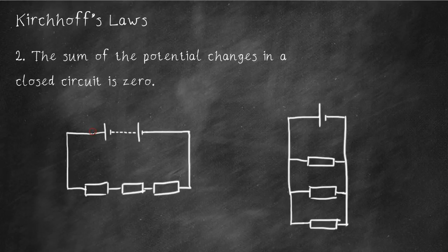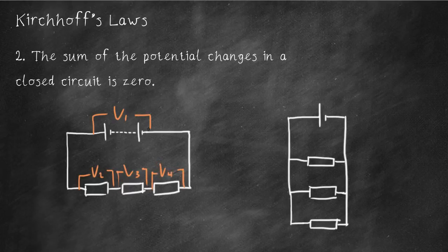So what that means is the voltage across here, V1, is equal to V2 plus V3 plus V4. What we're saying is the potential difference across here from negative to positive is the same as from positive all the way back down to negative. Written algebraically, V1 is equal to V2 plus V3 plus V4.